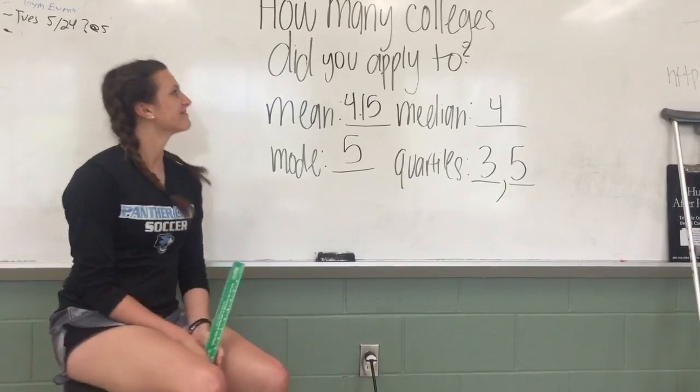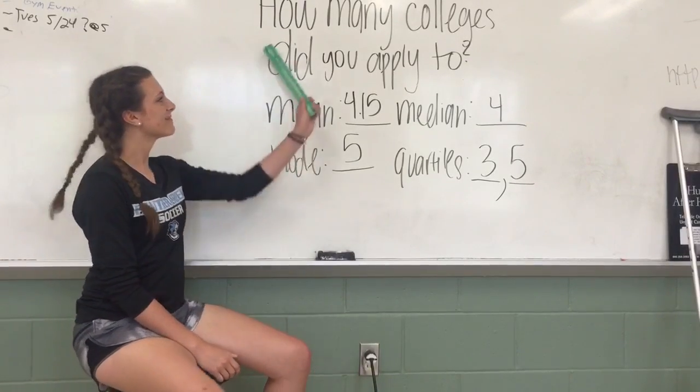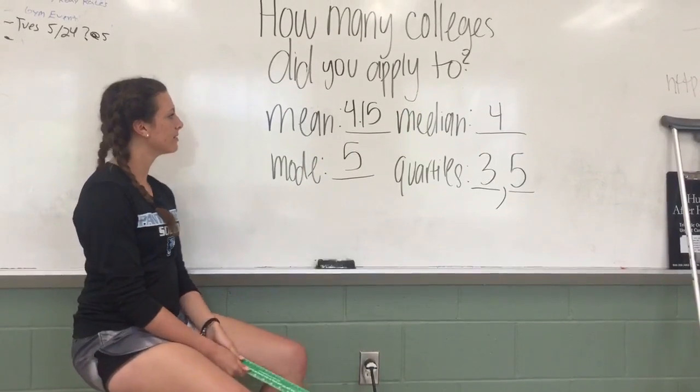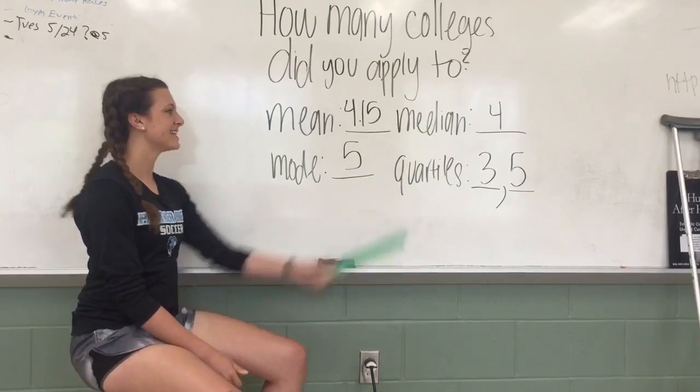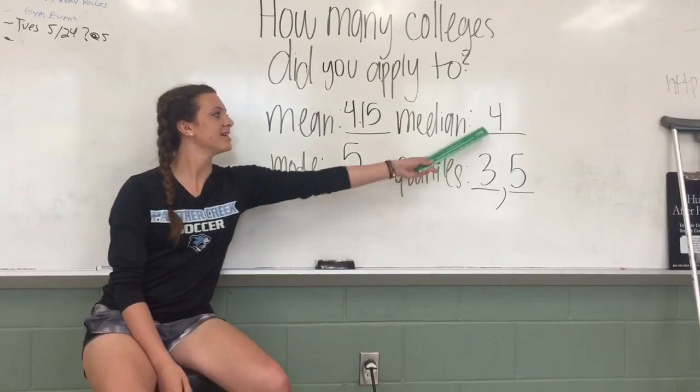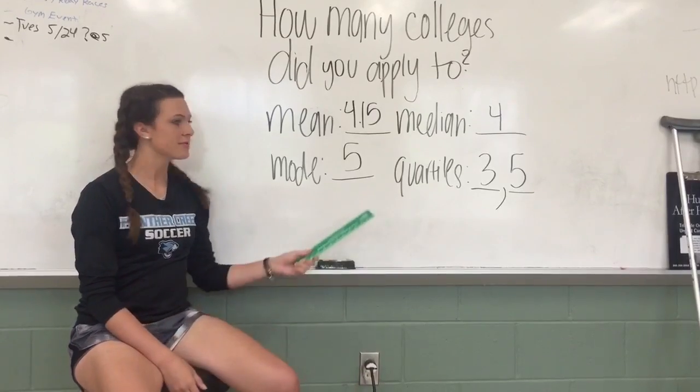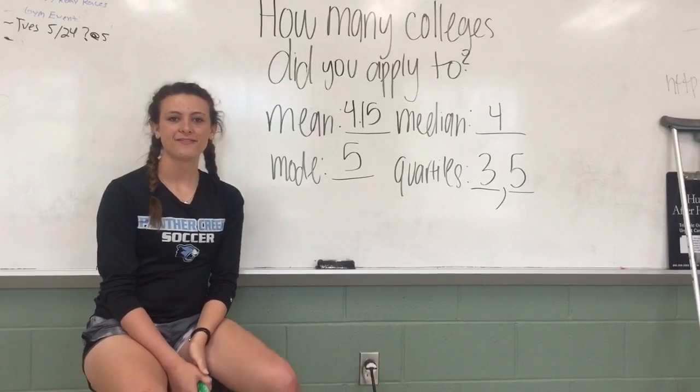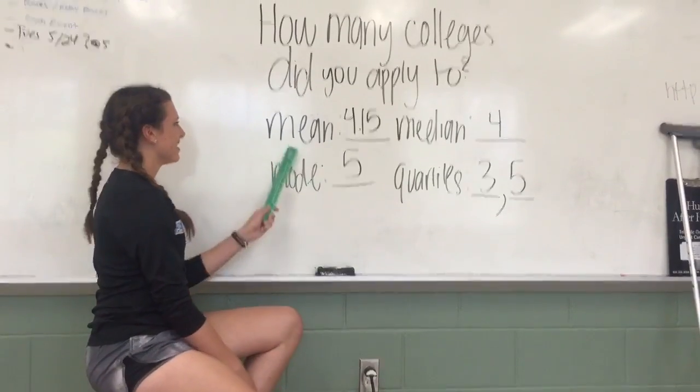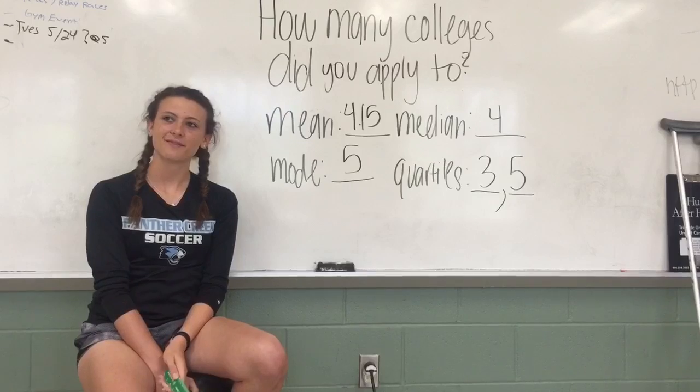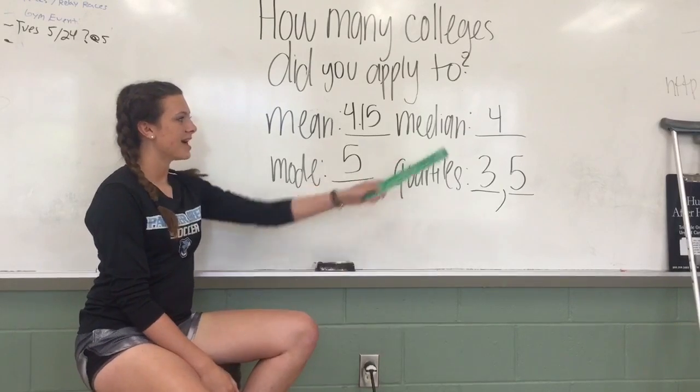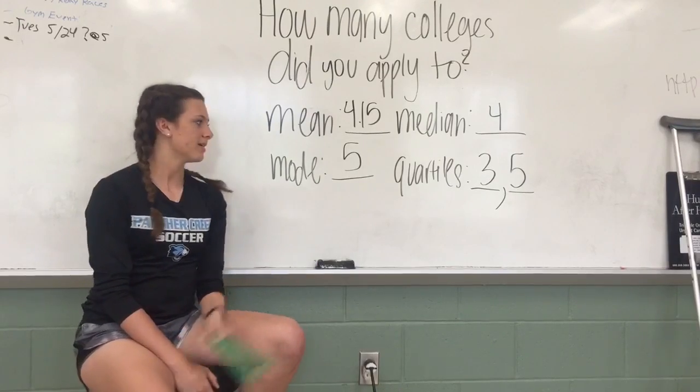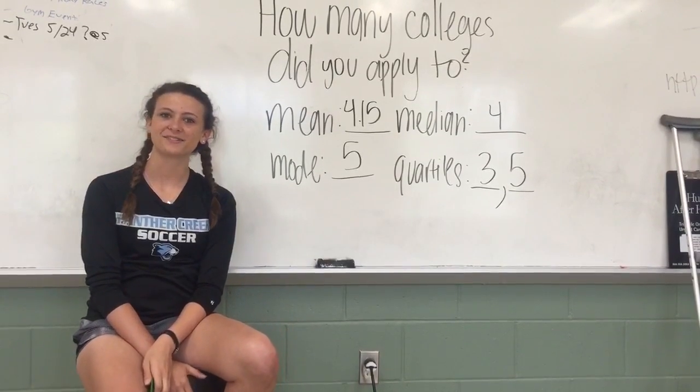Hi, I'm Elizabeth. Our sample question was, how many colleges do you apply to? The mean of our sample was 4.15, the median of our sample was 4, the mode of our sample was 5, and our quartiles were 3 and 5. Now, how did we find these? Good question. The mean is all the numbers added together divided by the amount of numbers. Our median is in the middle of the numbers. Our mode is the most common number, and our quartiles are quartiles.